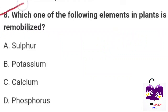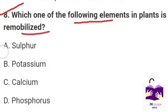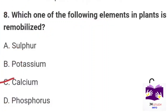Next question: Which one of the following elements in plants is not remobilized? Option A: sulphur. Option B: potassium. Option C: calcium. Option D: phosphorus. Correct option is Part C: calcium.